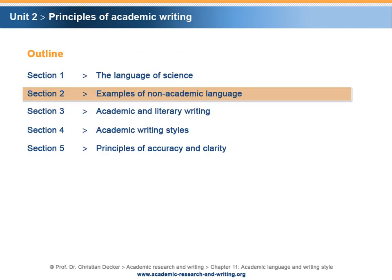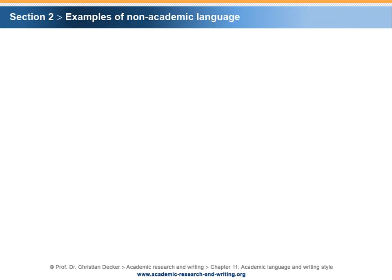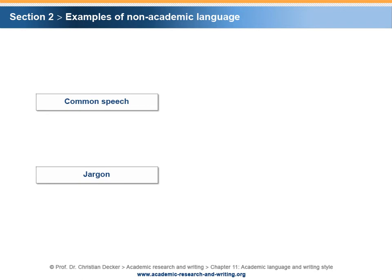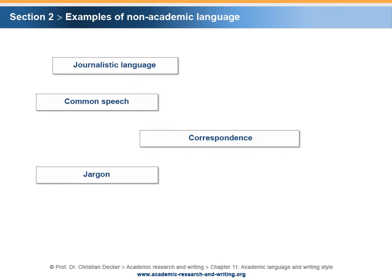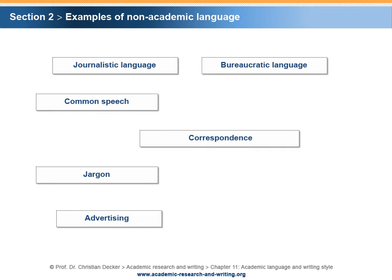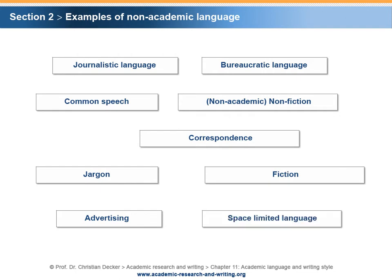Section 2 – Examples of non-academic language. Non-academic language with its different levels of formality occurs in many different areas: common speech, jargon as a special language used by a special group, printed or e-correspondence, journalism in its various forms, advertising, bureaucracy, non-fictional literature that is not academic, and of course fictional literature. A young language is the so-called space-limited language that has developed along with the use of electronic media and the transmission of electronic messages. It is characterized by reduced, condensed, and coded elements. Non-academic language is predominant in spoken and printed communication, which is why we must put special emphasis on identifying and mastering scientific language.